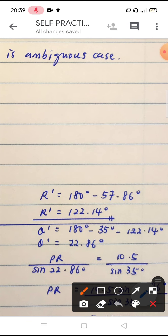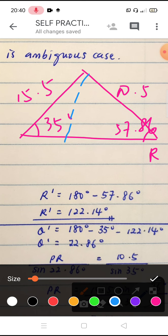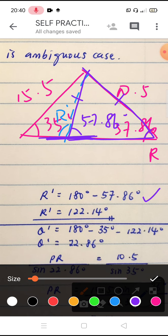So this is the triangle. This is the angle 35 degree, here is 10.5, here is 15.5, and we just get the R is 57.86.